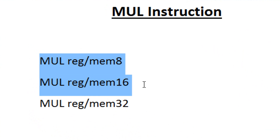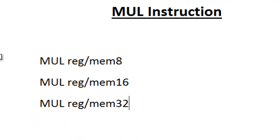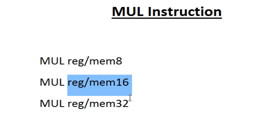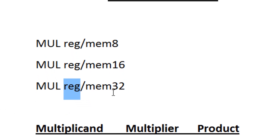So this is the syntax of a MUL instruction and there are three versions. You can either type MUL followed by an 8-bit register or 8-bit memory. The second version is MUL followed by a 16-bit register or 16-bit memory. The third version is MUL followed by a 32-bit register or 32-bit memory.